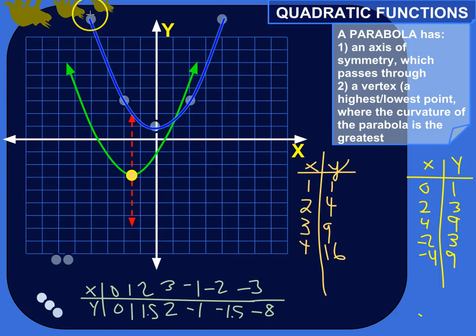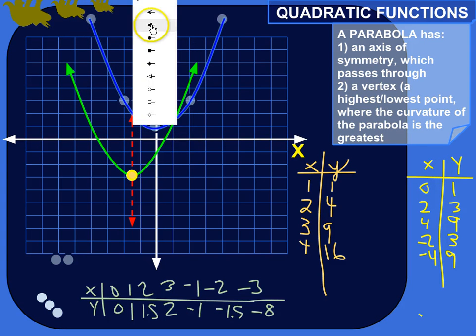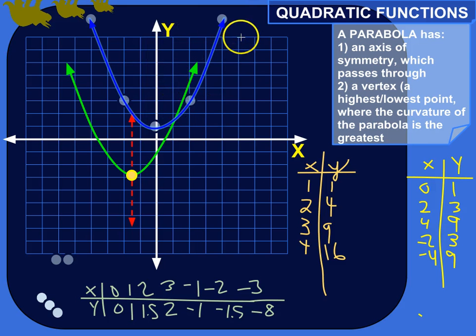So, and both these ends are pointing in the same direction, off to infinity. In this case, positive infinity. So yeah, we'd say, oops, I meant to do a check mark there. We'd say, yeah, that is a parabola.